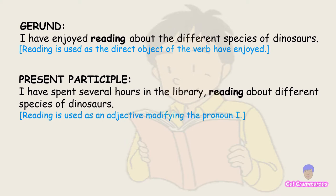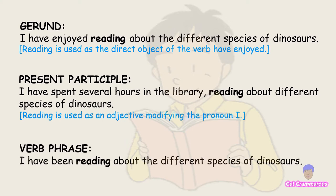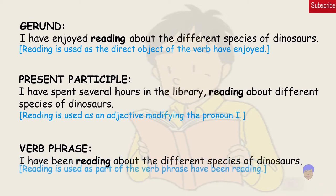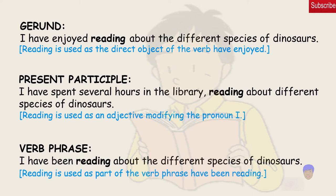Verb phrase: 'I have been reading about the different species of dinosaurs.' In this context, reading is used as part of the verb phrase have been reading.